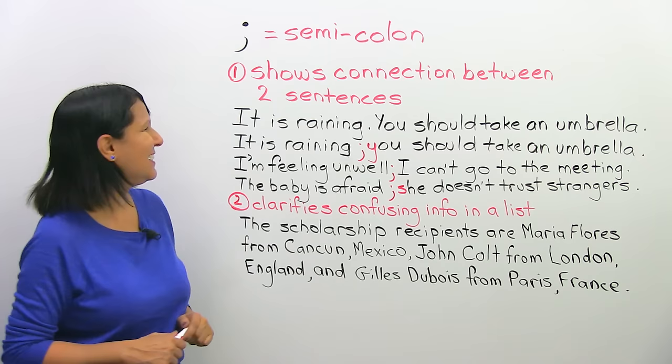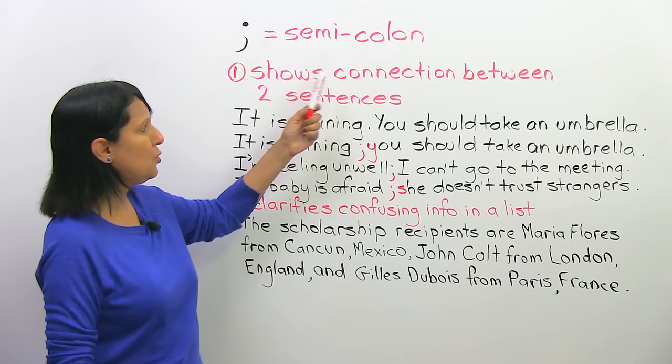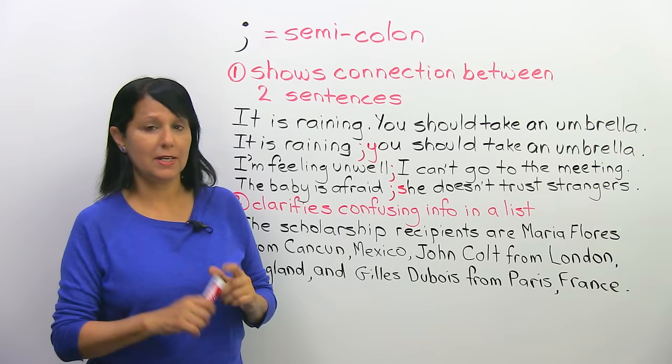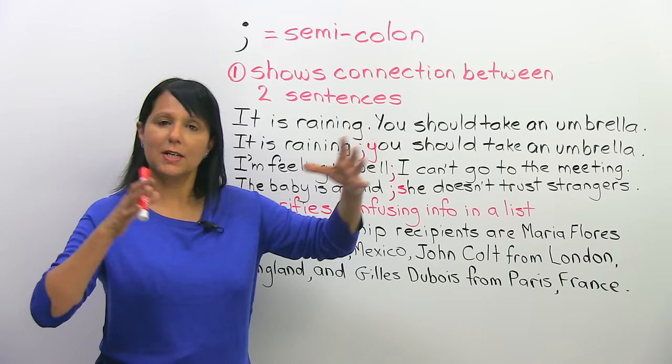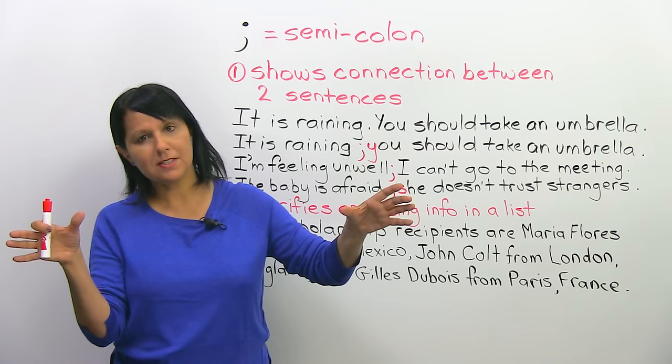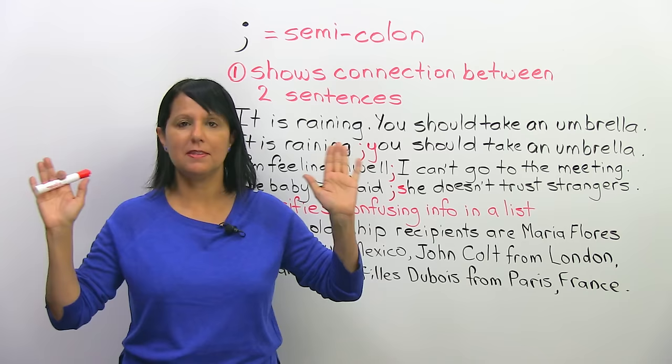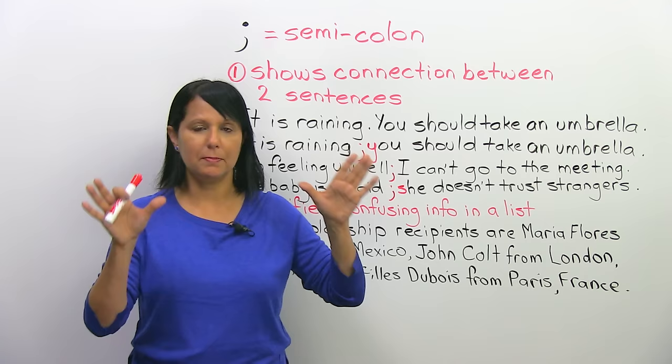The first thing the semi-colon does is show a connection between two sentences. That's important — I said two sentences, not two parts of sentences, not two dependent clauses. Two complete sentences. Both sides, before and after the semi-colon, have to be complete sentences by themselves. There are a few small changes which I will explain, but first of all, remember that both sides have to be complete sentences.